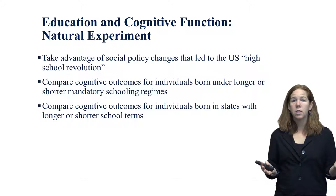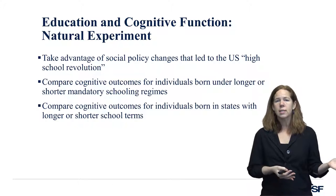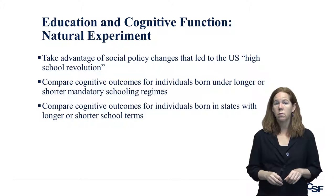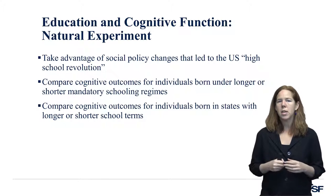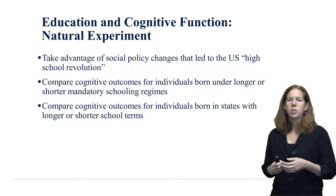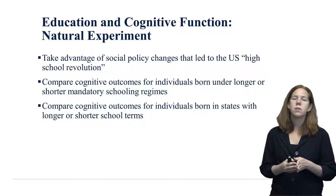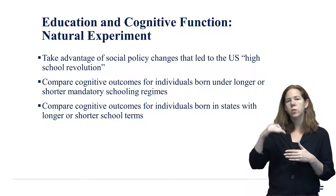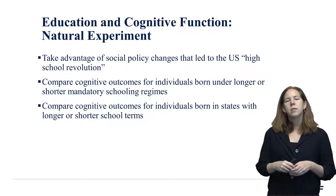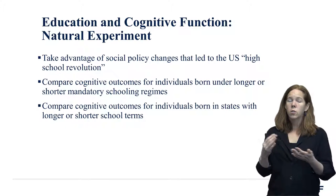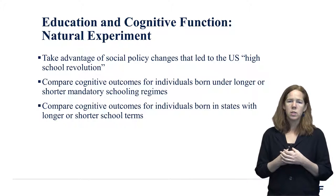That's what we did — we took advantage of these policy changes across all the states. Education is very decentralized in the United States, so every state has its own set of laws and was running its own little natural experiment by changing mandatory schooling. We took advantage of those policy changes and compared the cognitive outcomes decades later for kids born before and after an increase in mandatory schooling in South Carolina, Illinois, New York, or Colorado, to see whether those mandated educational increases actually translated into health improvements.